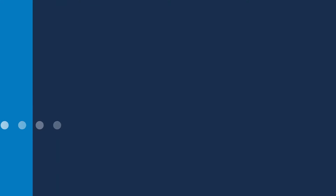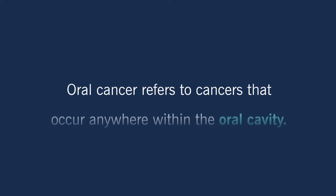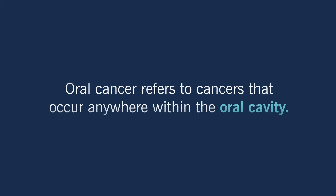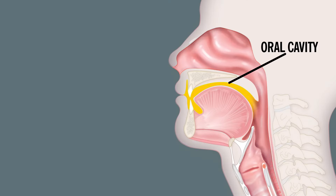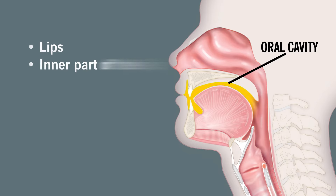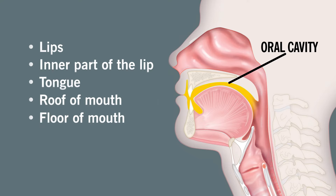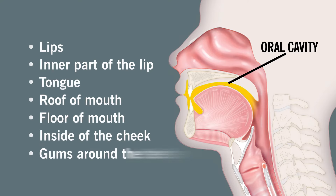Oral cancer refers to cancers that occur anywhere within the oral cavity. Any of the structures there, including the lips, the inner part of the lip or the wet part of the lips, the tongue, the roof of the mouth, the floor of the mouth, the inside of the cheek, and the gums around the teeth all comprise the oral cavity.